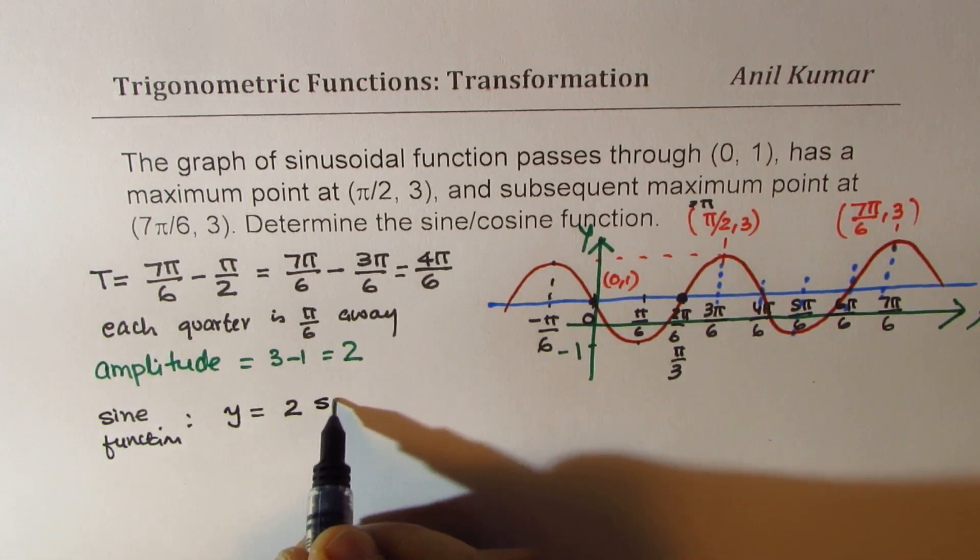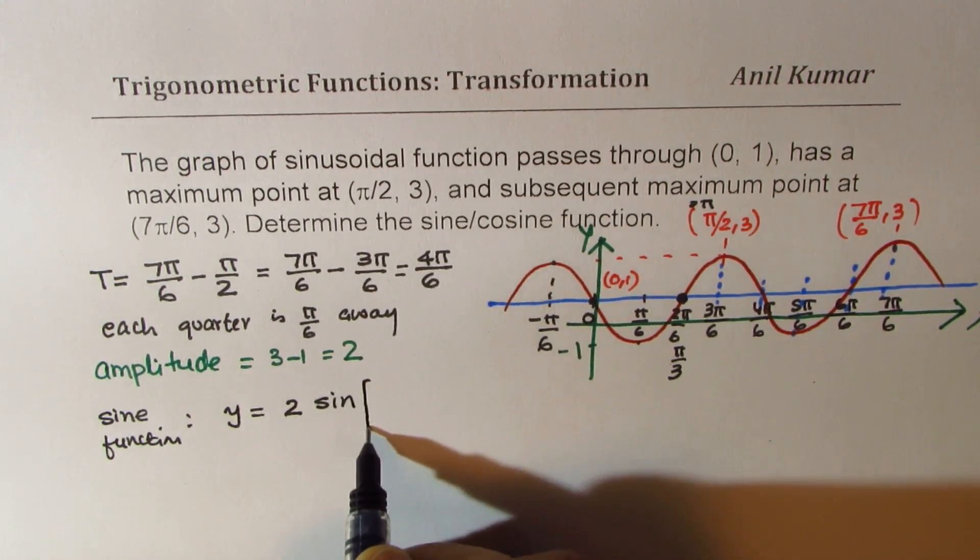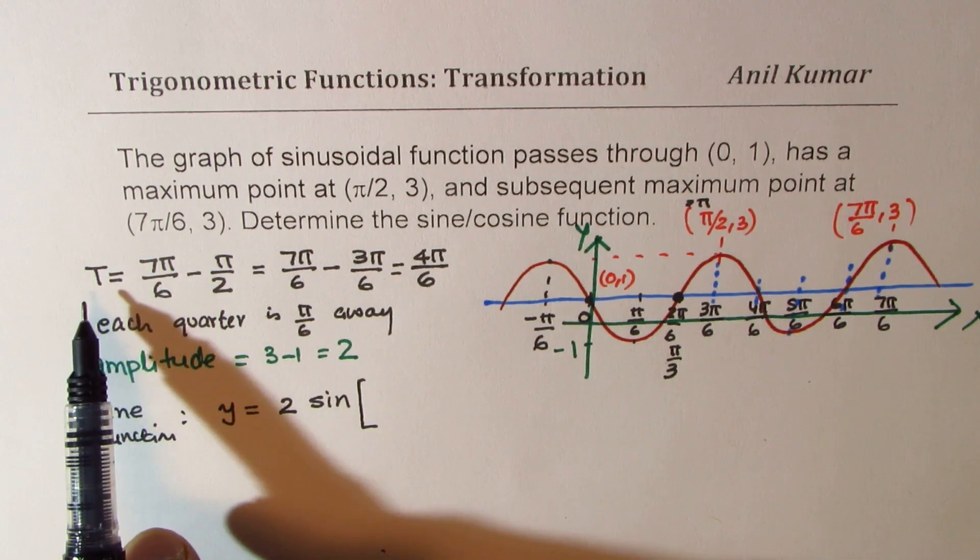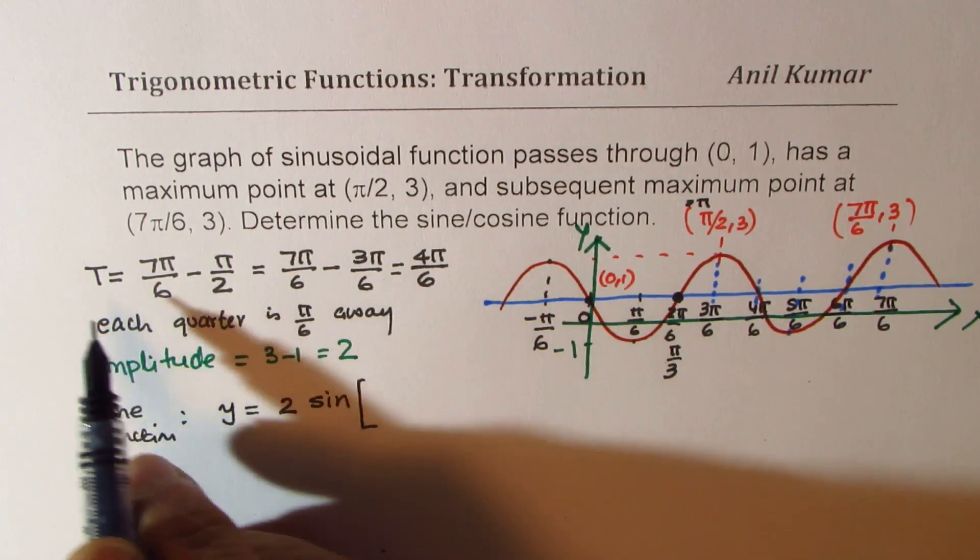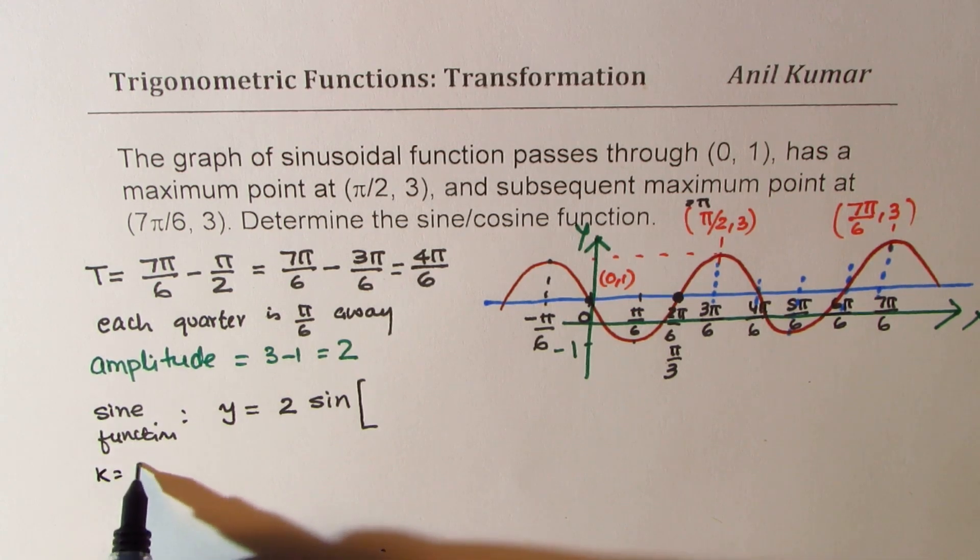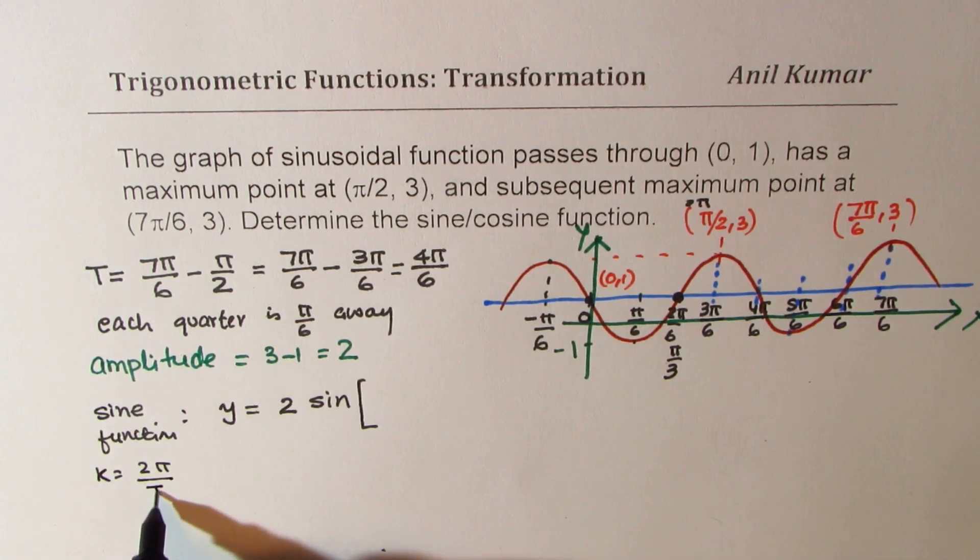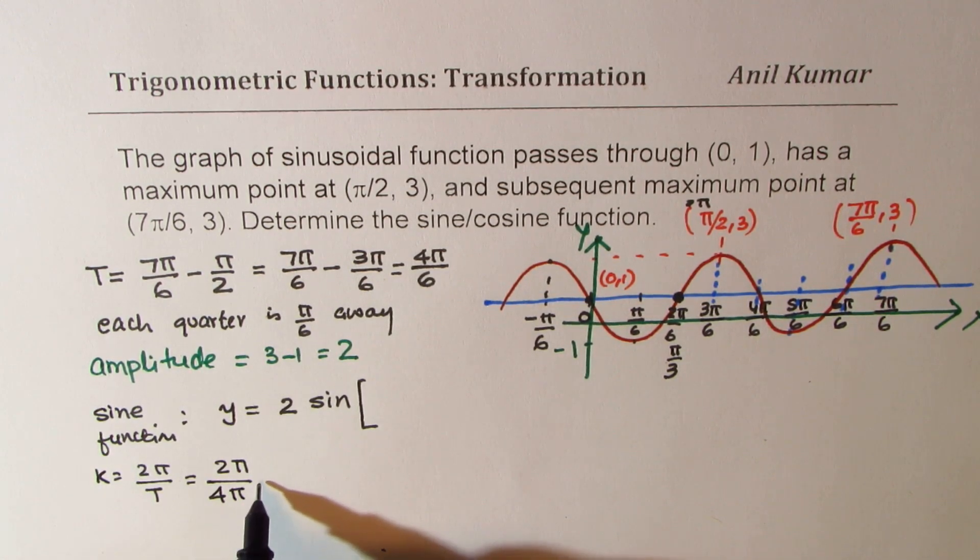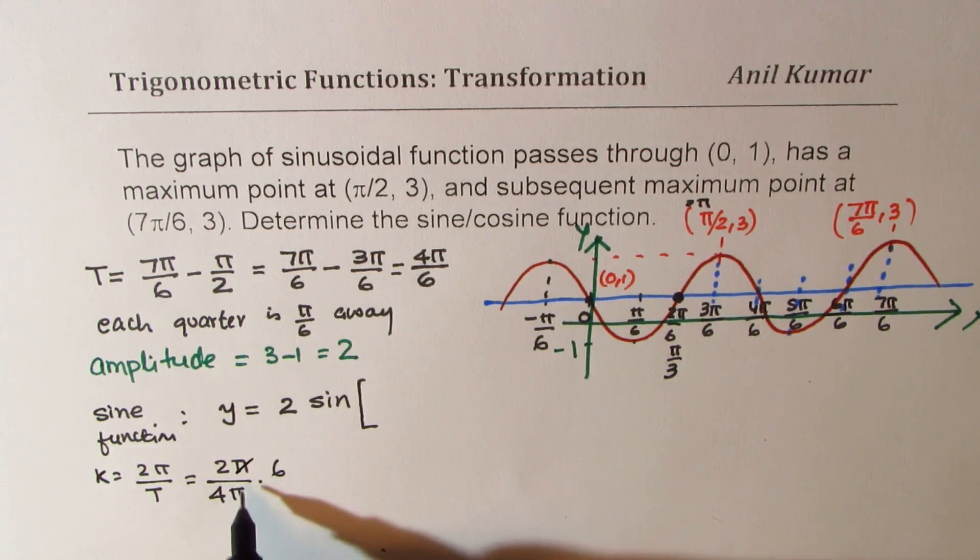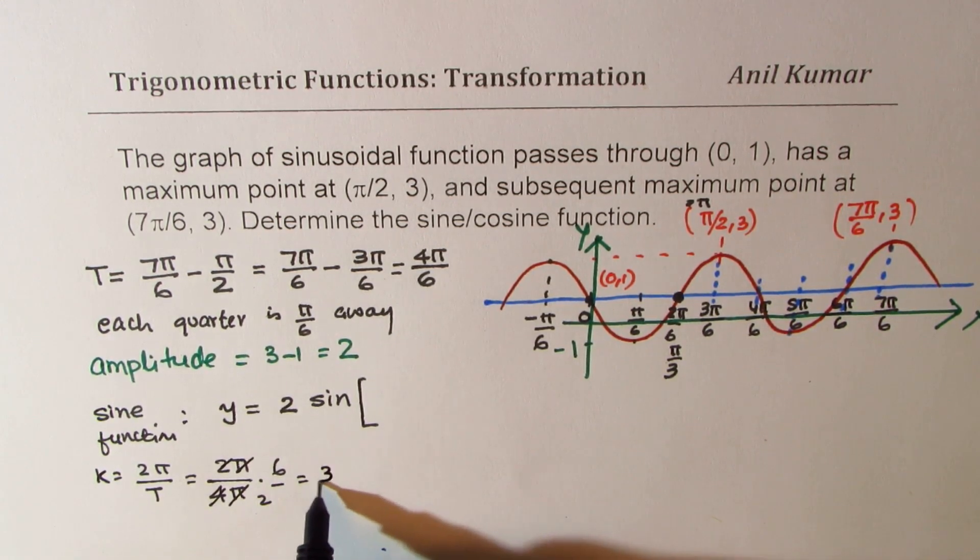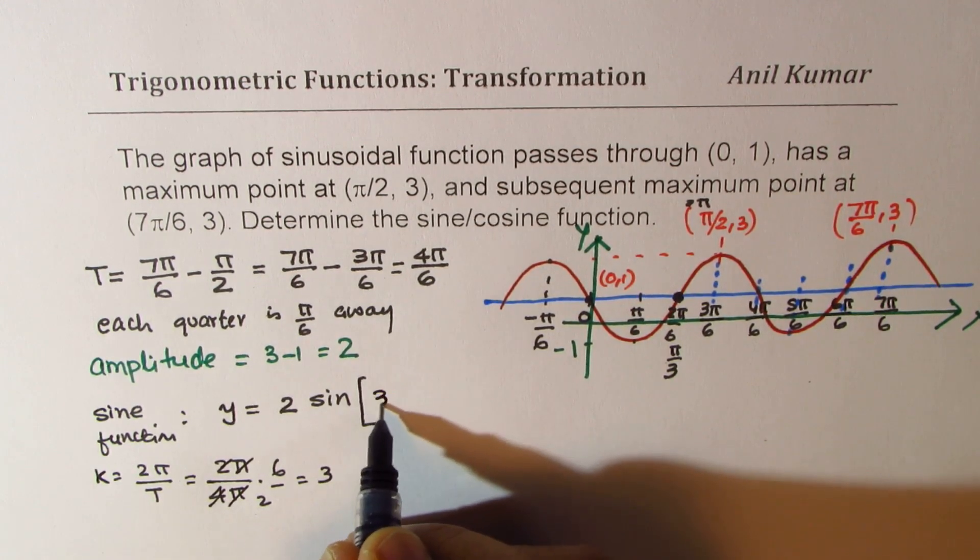Amplitude is 2. So we could write this as y equals to amplitude of 2, sine of k. Let me write down the k, which is 2π/t. So k equals to 2π by the time period t, which gives us 2π divided by 4π/6. So that gives you π and π cancels. So that gives you a value of 3. So sine 3.